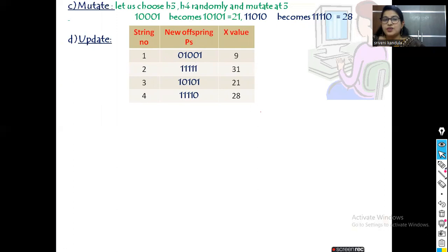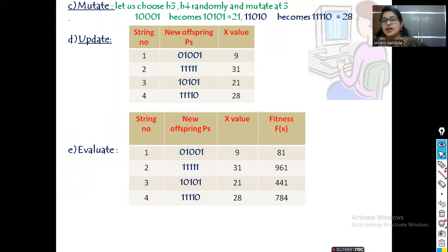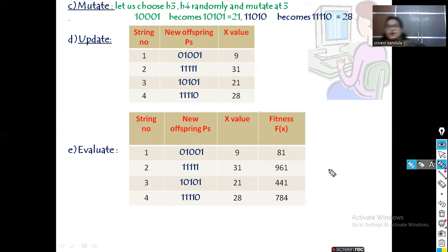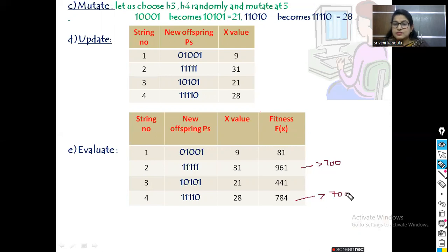We update the population with the new offspring. The new population and its x values are shown. Calculating fitness again: 81, 961, 441, and 784. The fitness threshold is 700. Both 961 and 784 exceed the threshold. Taking the maximum fitness value — 961 — which is greater than 700, we can stop the procedure.